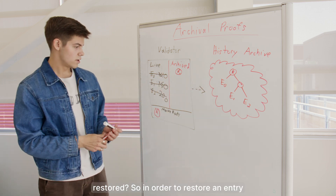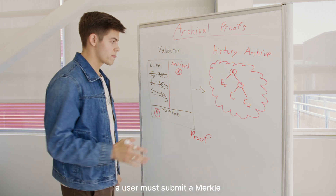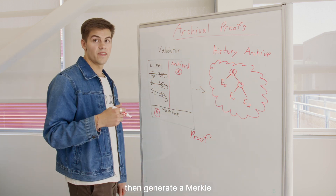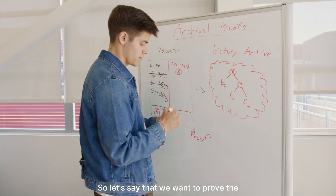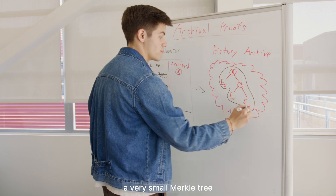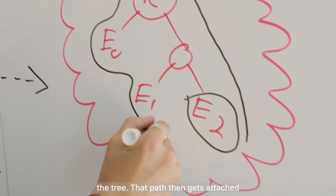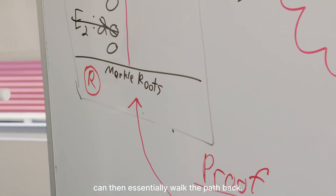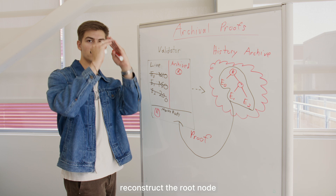So how is an entry restored? In order to restore an entry, a user must submit a Merkle proof. What that looks like is that the user will go to the Merkle tree stored in the history archive, and then generate a Merkle proof of inclusion — which is just the path and all of its neighbors of the entry being proven. So let's say that we want to prove the entry E2. We just include the path and its neighbors in the Merkle tree. This is a very small Merkle tree, so the path is actually the entire tree, but in a much larger Merkle tree, this will only be a small subset. That path then gets attached and sent over to the validator, at which point the validator can walk the path back. The validator will rehash all those entries to reconstruct the root node based on this proof.